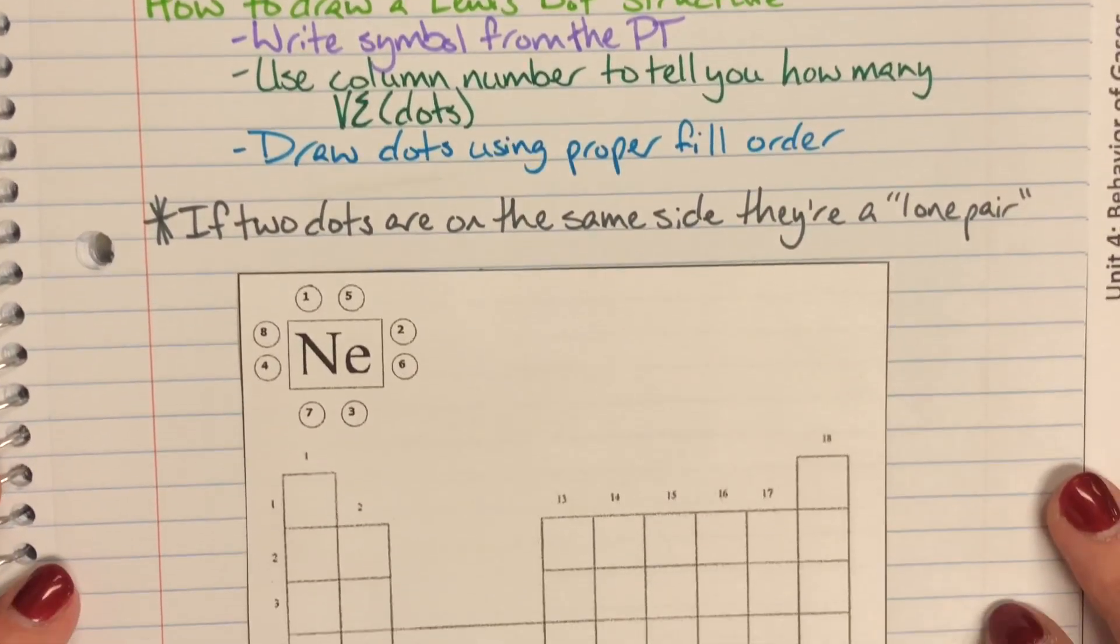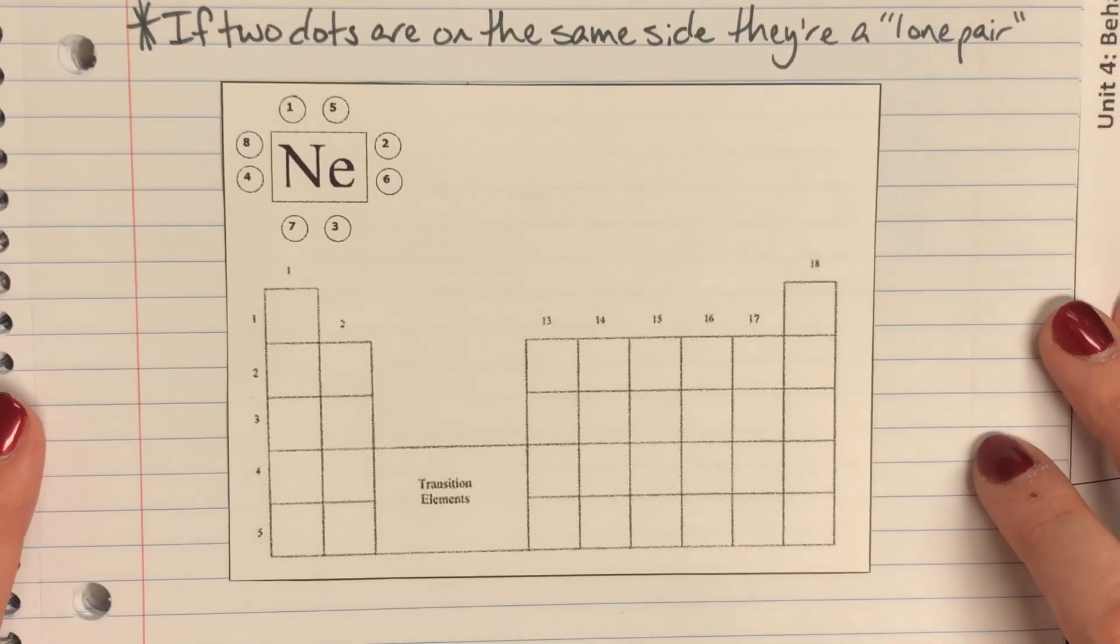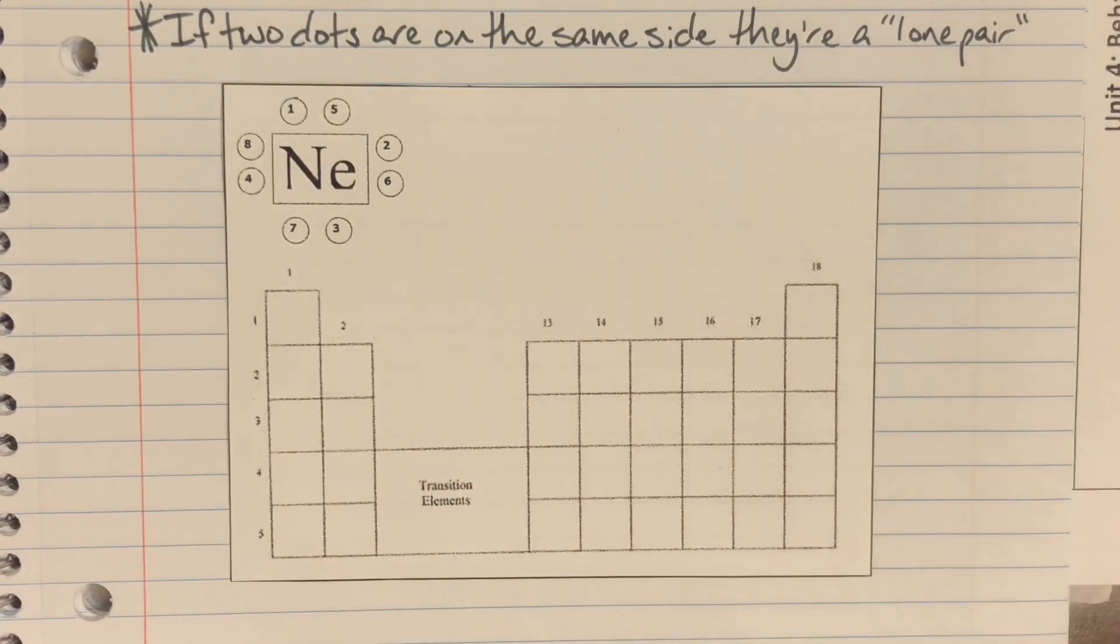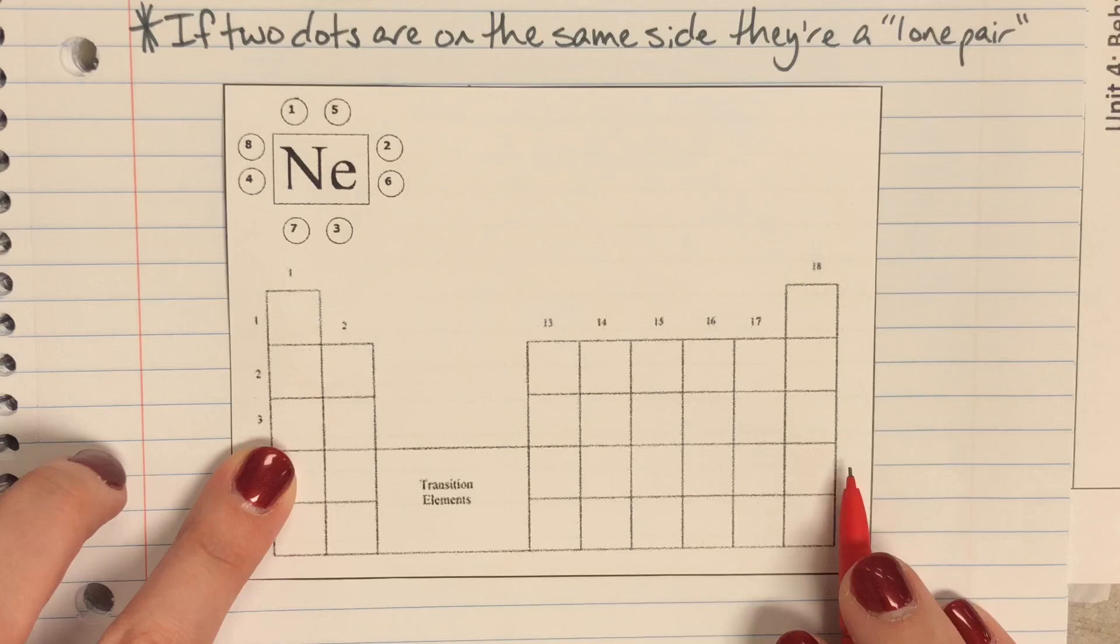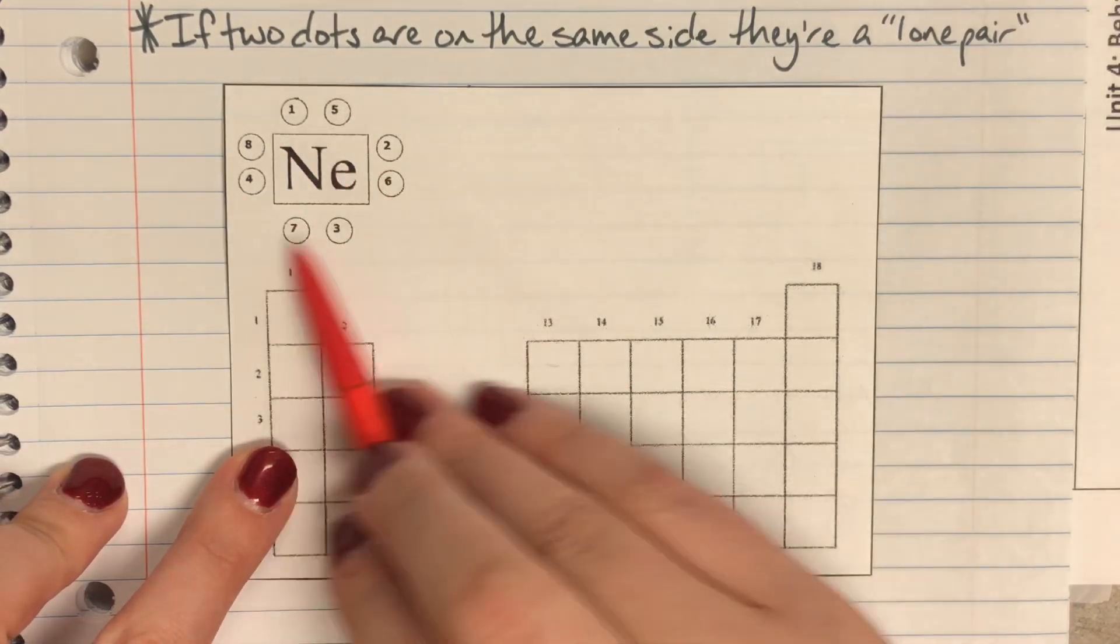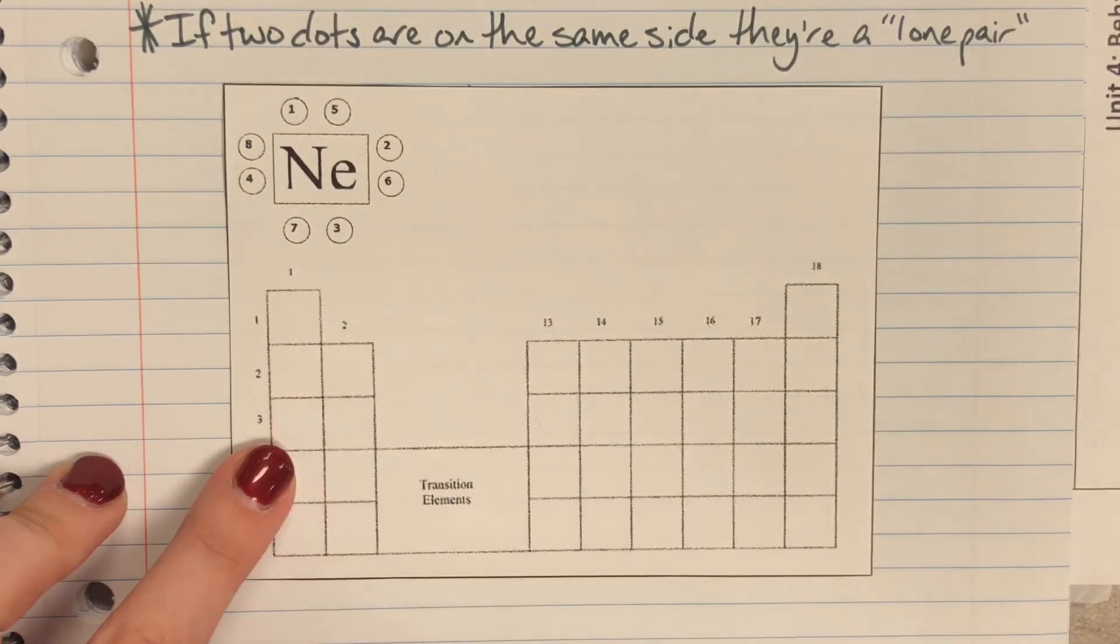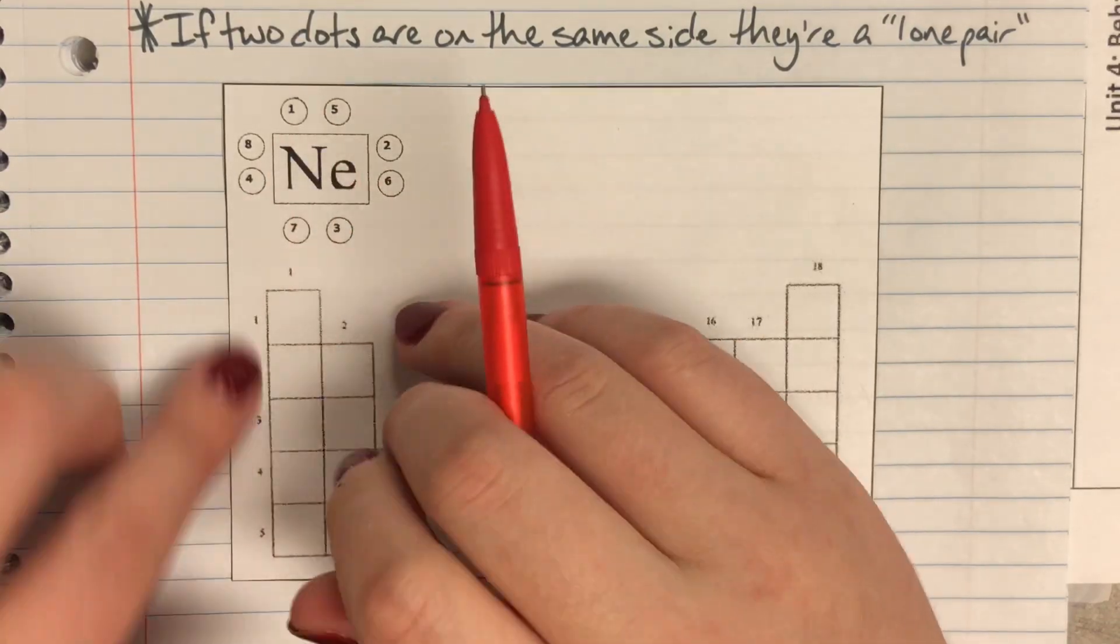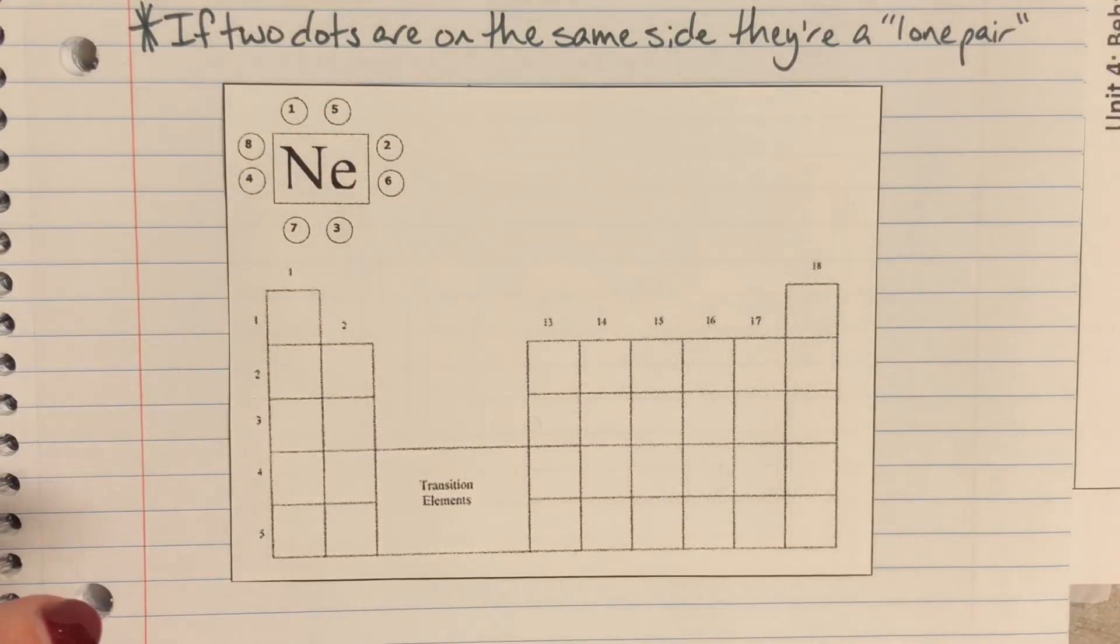Okay so here we have a simplified periodic table. You'll notice that the transition elements have been kind of snuffed out of my periodic table here but that is okay. We just need to go ahead and fill in these. Now you'll notice here we have an example Lewis dot structure. You'll notice inside of the actual circles we have numbers. This is the order in which you draw the circles for elemental Lewis dot.